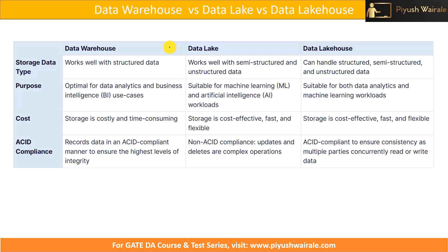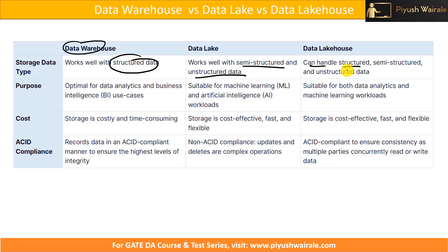Now let's look at the differences among all three. In terms of storage data type: a data warehouse works well with structured data. A data lake works with semi-structured and unstructured data. A data lakehouse can handle unstructured, semi-structured, or structured data. In terms of purpose: a data warehouse is optimal for data analytics and business intelligence use cases since it has structured data. A data lake is suitable for machine learning and AI workloads. A data lakehouse is suitable for both data analytics and machine learning workloads.